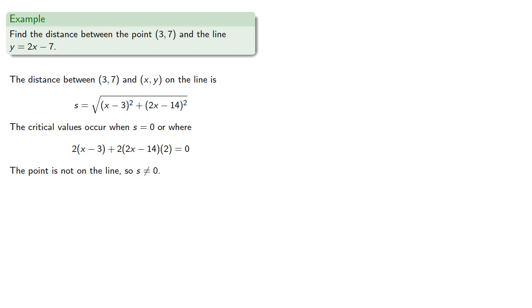So s can never be 0. So the critical value must be where the numerator is 0. Solving gives us x = 62/10. And you should probably reduce this, but this isn't an arithmetic class. Let's focus on the calculus.